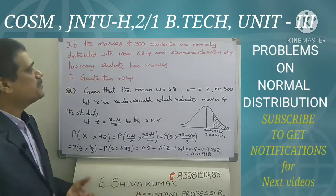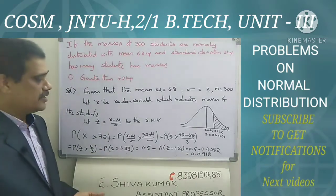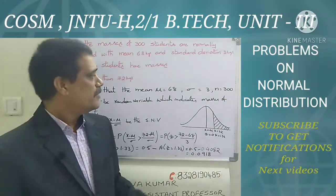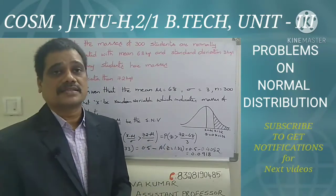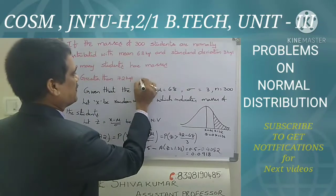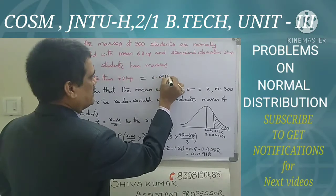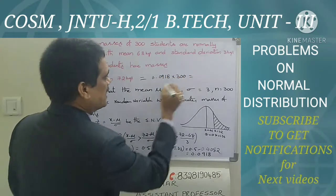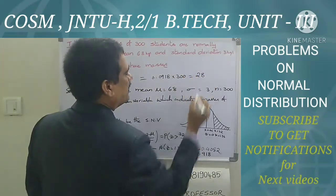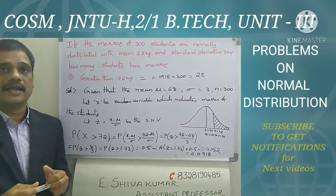But what we need is the number of students with masses greater than 72 kg. So multiply 300 by 0.0918: the answer is 300 into 0.0918 equals approximately 28. To solve these problems, a calculator and the Z table are compulsory.